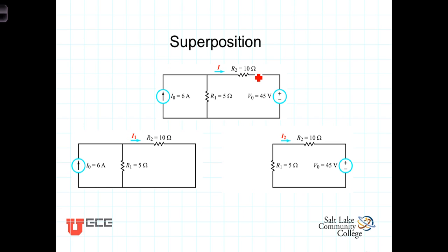Superposition says that we can determine some quantity within the circuit, say for example the current flowing through this 10 ohm resistor. We can determine the total current resulting from both of these sources combined by determining the current through this 10 ohm resistor due to the current source alone and the current through this 10 ohm resistor due to the voltage source alone.